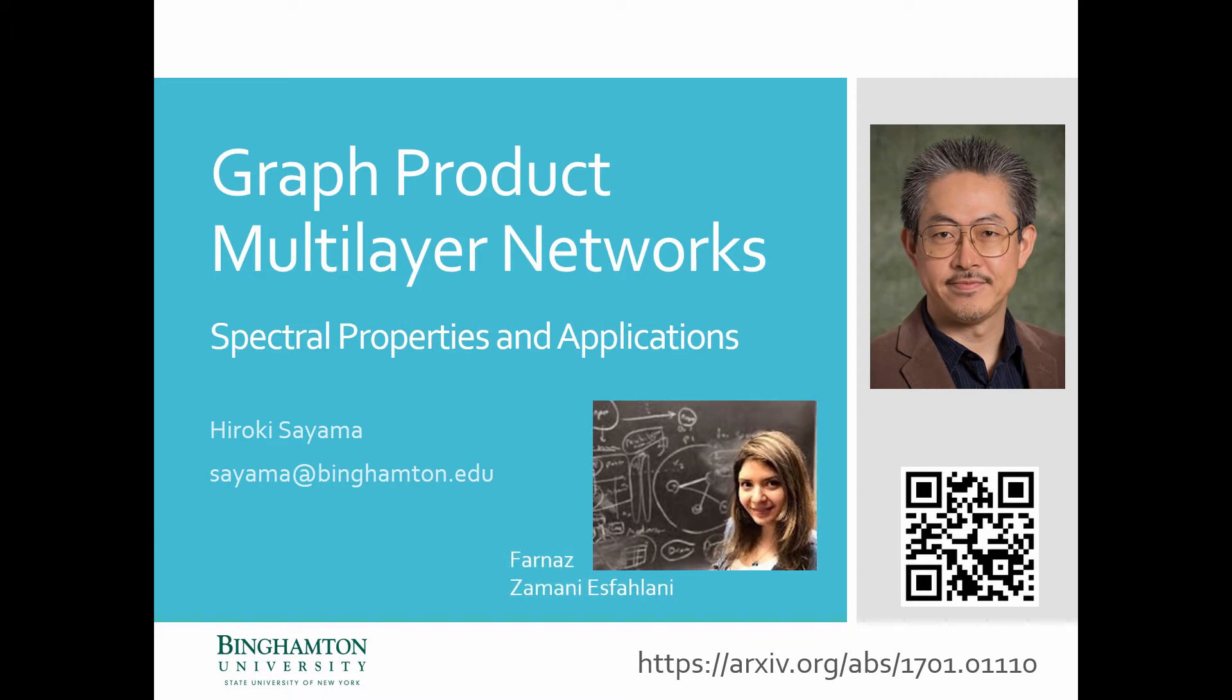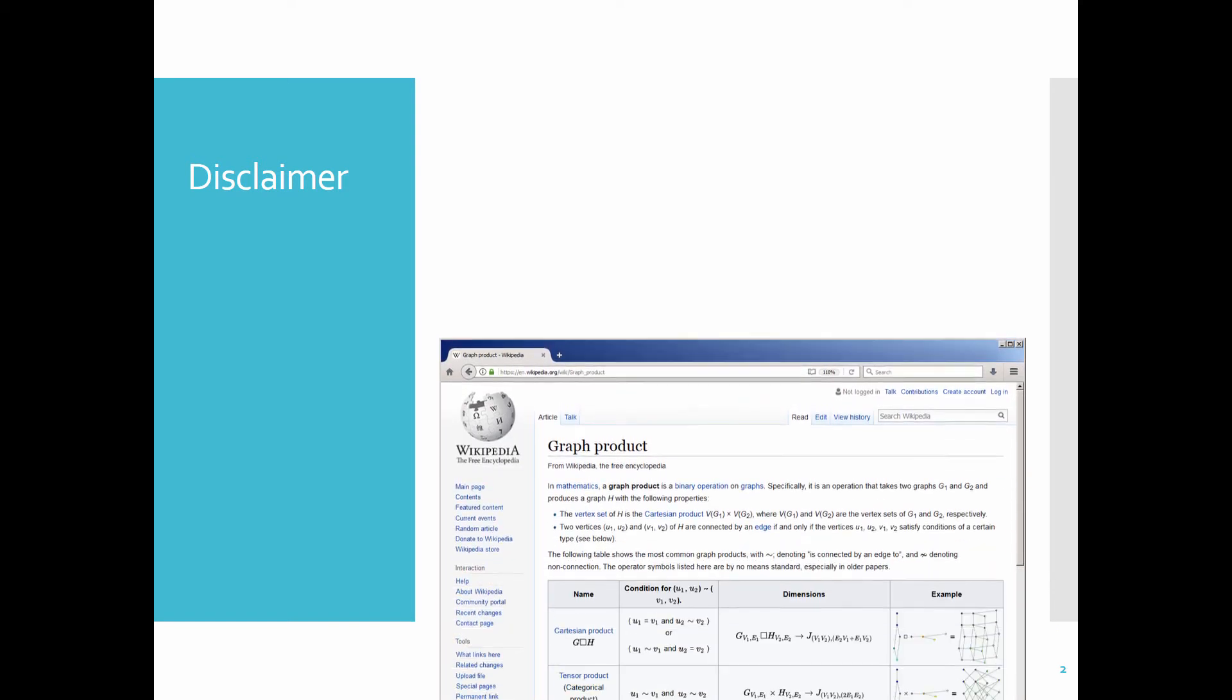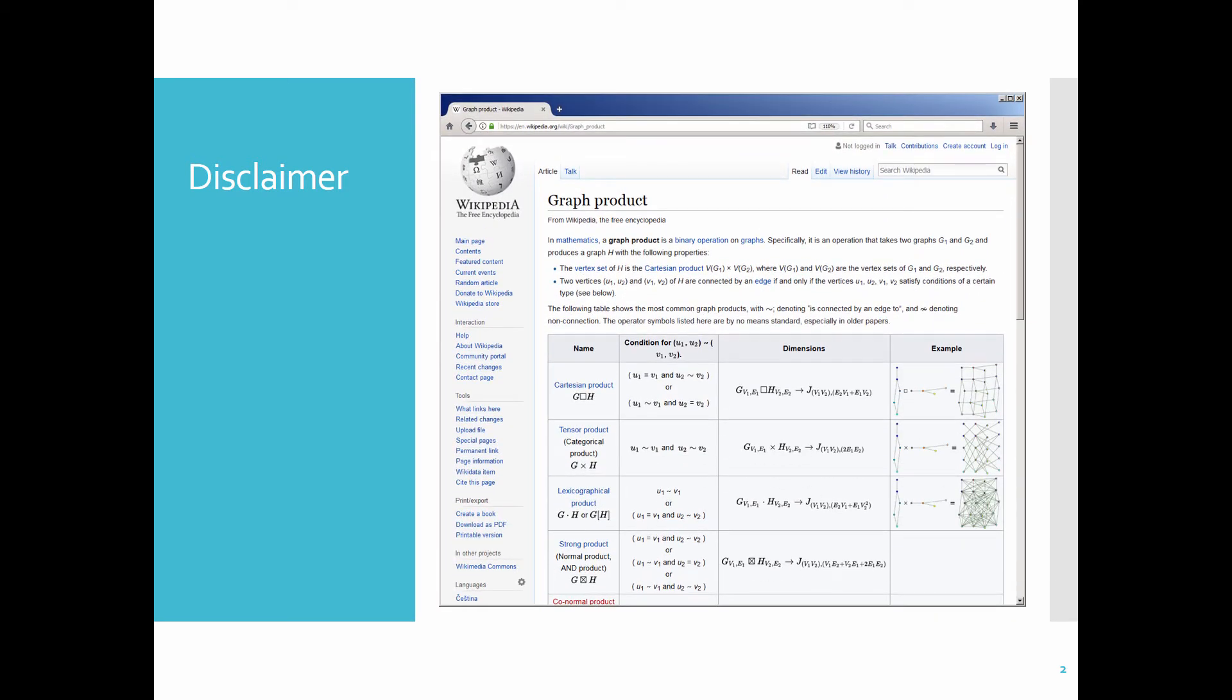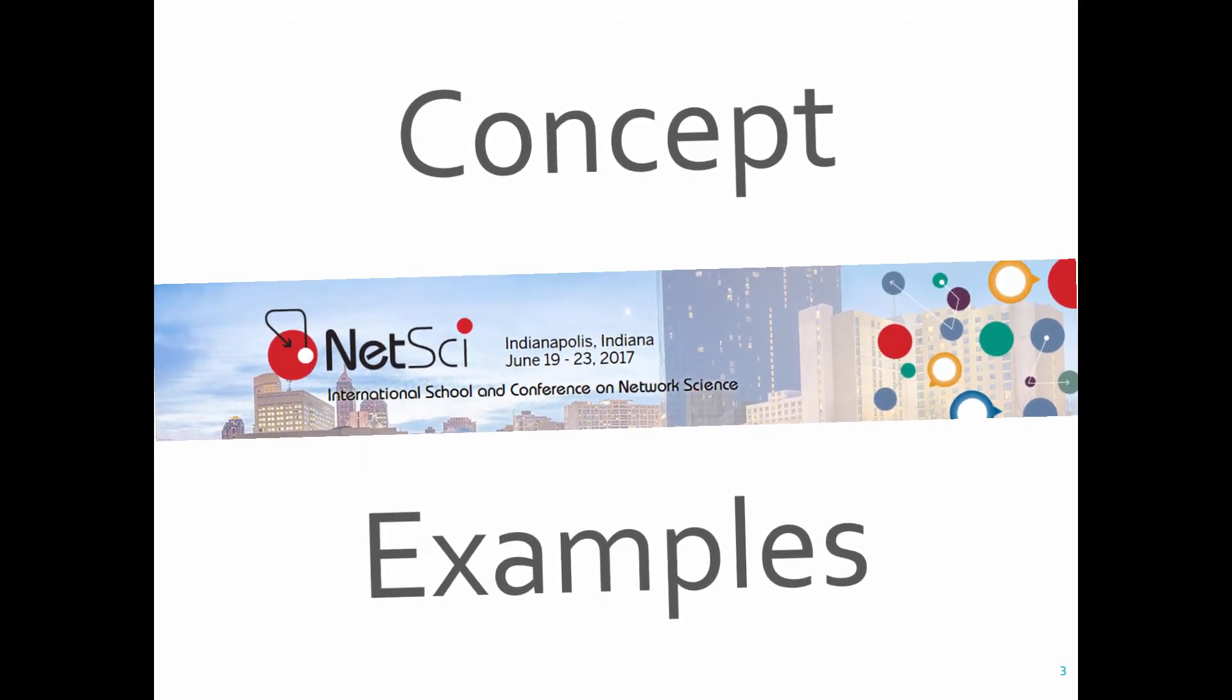Okay, so my talk today is about graph product multilayer networks. I'm going to define what it is, discuss what their mathematical properties are, and demonstrate how they can be used for the modeling and analysis of complex networks. Details can be found in the archive preprint linked from here. A quick disclaimer, the graph product is not really new stuff. It has been already well established in discrete mathematics, and maybe some of you are already using it.